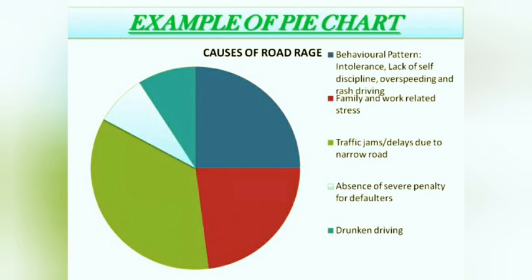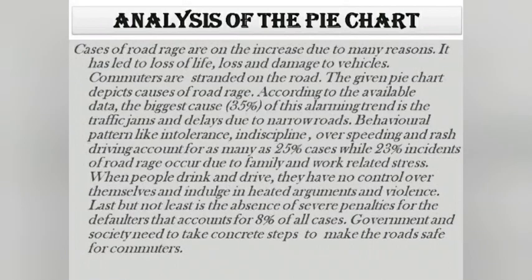Other options like drunken driving — if you are asked to write an analytical issue on this, what will you do? Let's write: 'Cases of road rage are on the increase due to many reasons. It has led to loss of life.' This becomes the introduction of the topic on which the graph was given. 'Loss and damage to vehicles. Commuters are stranded on the road.' Then: 'The given pie chart depicts causes of road rage' — this completes the introduction. Then the analysis begins according to the available data, and finally the conclusion: 'Government and society need to take concrete steps to make the roads safe for commuters.' This is the conclusion.